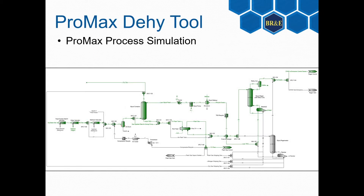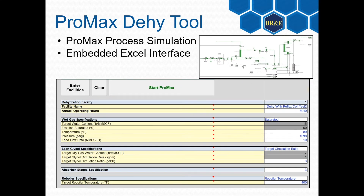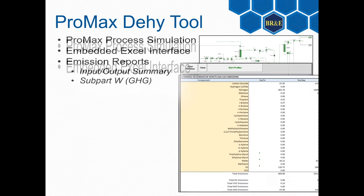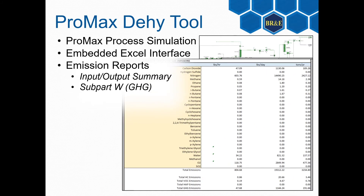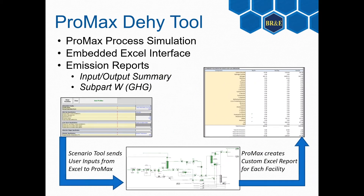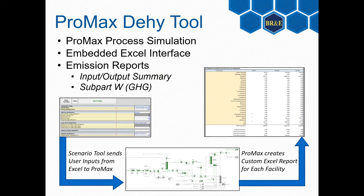The dehydration tool contains three main parts: the Pro Max simulation itself, the embedded Excel interface controlling the inputs to the model and control, and once the model has finished running, the final emission reports. Since the model utilizes Pro Max's scenario tool to communicate between Excel and the simulation, users only need to refer to the embedded Excel workbook to set up their dehydration facilities.